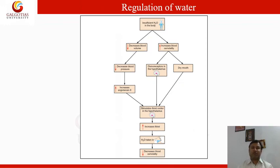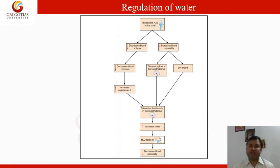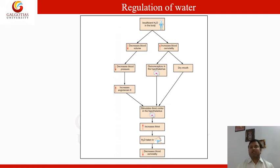Water regulation occurs as follows: when insufficient water is present, blood volume decreases, causing decreased blood pressure, which increases angiotensin II, stimulating the thirst center in the hypothalamus. As a result, thirst increases and we take more water, decreasing blood osmolality. A second mechanism also occurs: water deficiency increases blood osmolality, causing dry mouth and activating osmoreceptors in the hypothalamus. Both actions stimulate the thirst center, increasing thirst and water intake, which decreases blood osmolality and restores water balance.